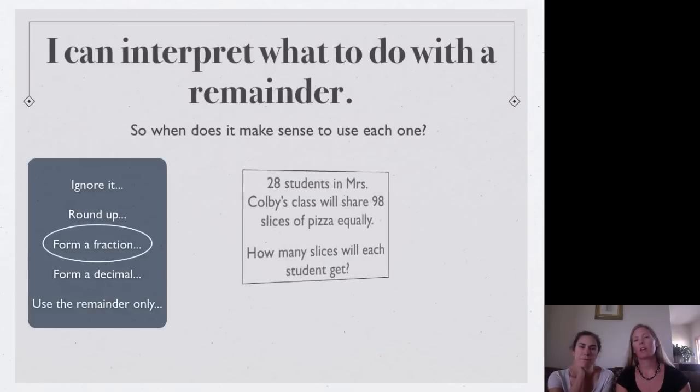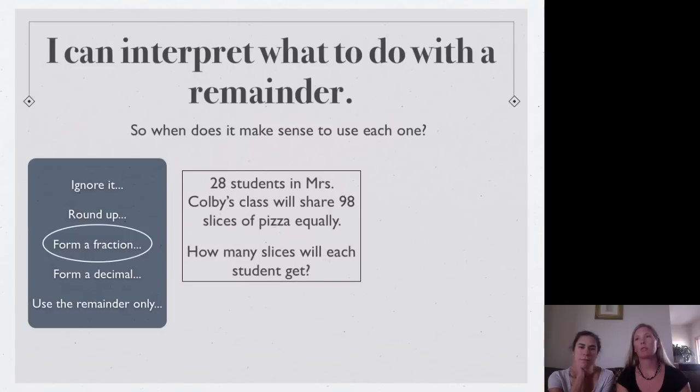Now the next one is forming a fraction. So this is when you would normally say an answer as a fraction. That's when you might turn your remainder into a fraction. So there's 28 students in Mrs. Colby's class who will share 98 slices of pizza equally. How many slices will each student get?